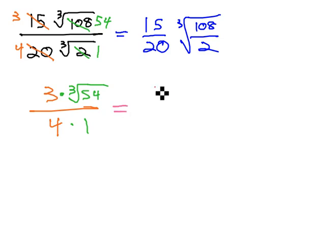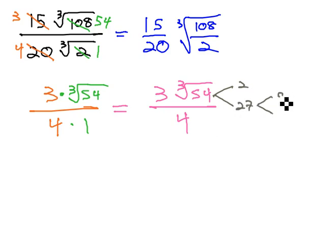Let's write this a bit cleaner. We have 3 times the cube root of 54 over 4 times 1 is 4. However, we may notice that that cube root might simplify. I'm going to do the prime factorization off to the right, because I don't have any space beneath. 54 is 2 times 27, 27 is 9 times 3, and 9 is 3 times 3.